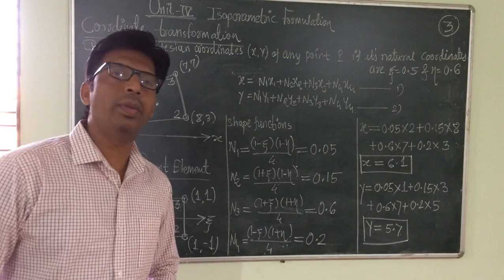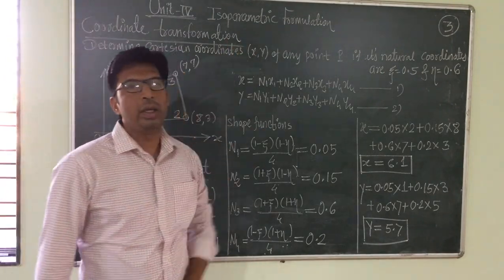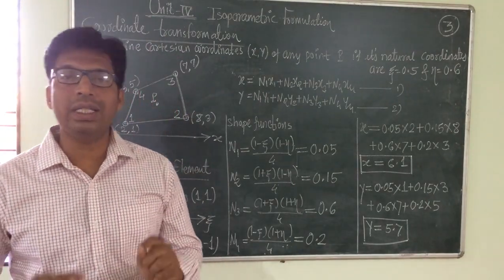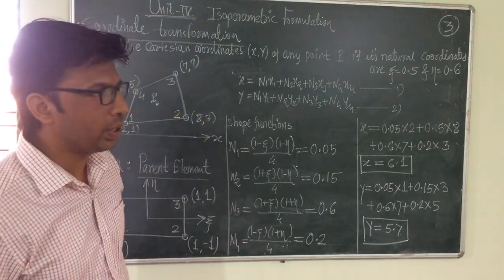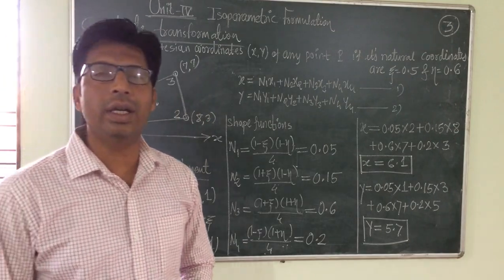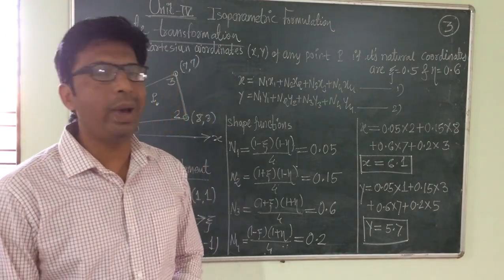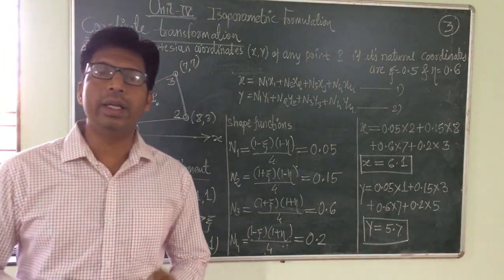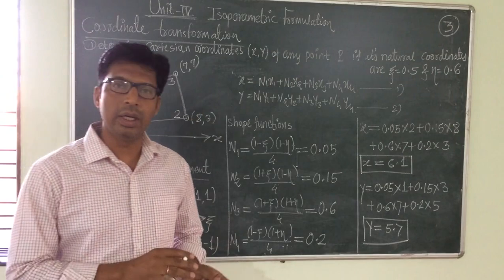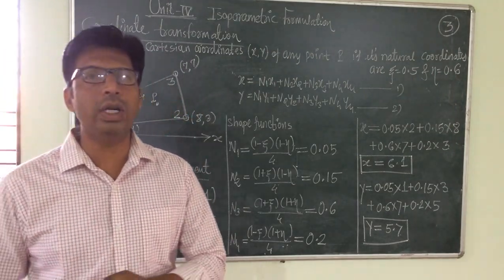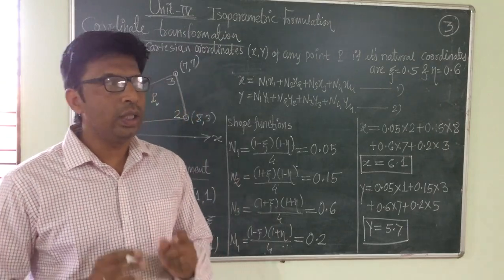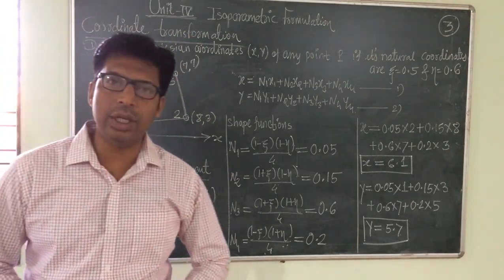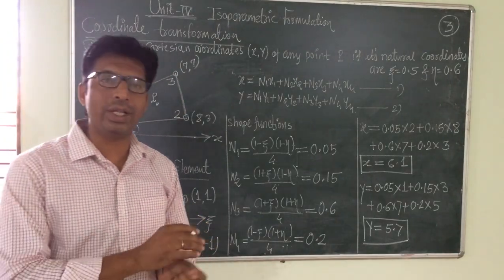Welcome to the third lecture of isoparametric formulation. In the first lecture we have seen that in isoparametric formulation, original elements called map elements are given in the global coordinate system, that is the x-y coordinate system. While analyzing these structures we consider the parent element, which is the equivalent element of the map element given in the natural coordinate system. During isoparametric formulation we often need to transfer Cartesian coordinates into natural coordinates or natural coordinates into Cartesian coordinates — this is called coordinate transformation.